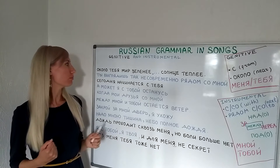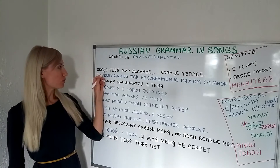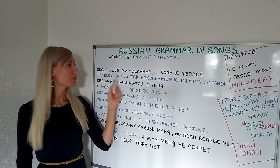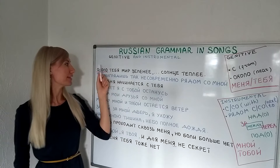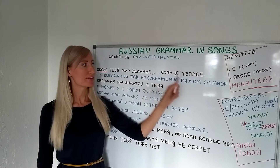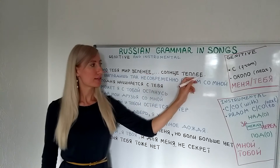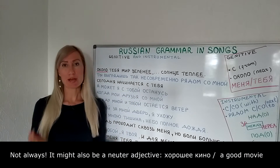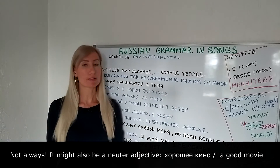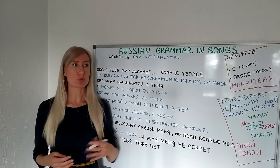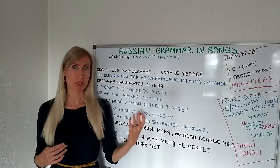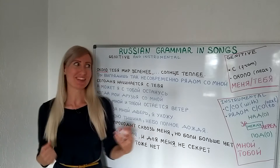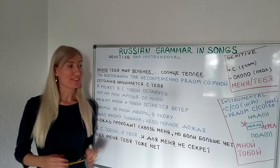This is a famous song by Jolka, a pop singer. We see the word 'около', so we know that 'тебя' is in the genitive case, meaning 'next to you — the world is greener, next to you — the sun is warmer.' When you see 'ее' or 'ее' at the end of adjectives, you can be sure it's a comparative form — 'зеленее' (greener), 'теплее' (warmer). There are also comparatives with the word 'более', or exceptions like 'хорошо' → 'лучше', just like in English 'good' → 'better' — we don't say 'gooder'.